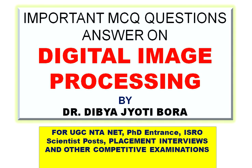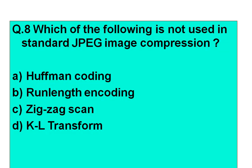Question number 8: Which of the following is NOT used in standard JPEG image compression? Option A: Huffman coding. Option B: Run-length encoding. Option C: Zigzag scan. Option D: KL transform. Your time starts now.